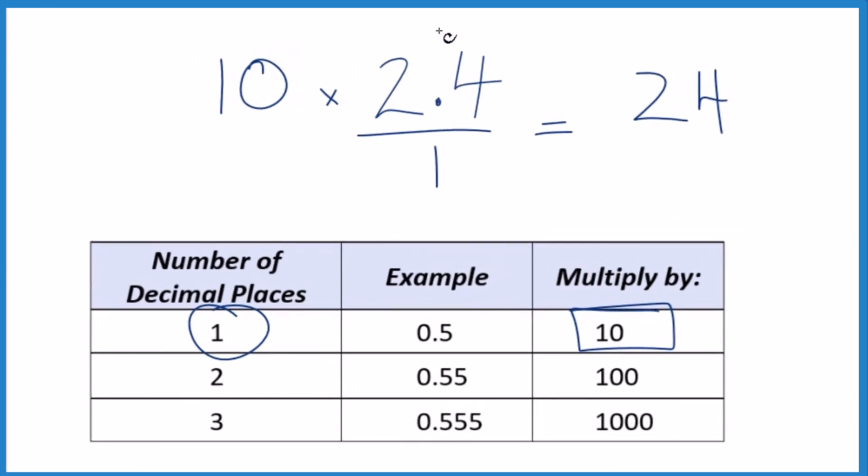But I can't just multiply the numerator by 10, I need to also multiply the denominator. That's because 10 over 10 is 1, so we're multiplying by 1. Don't change the value, just the way it's represented.